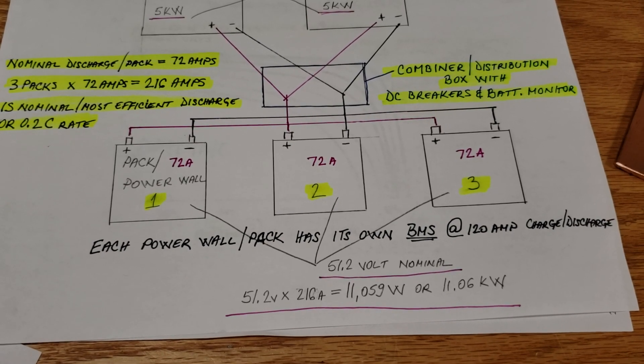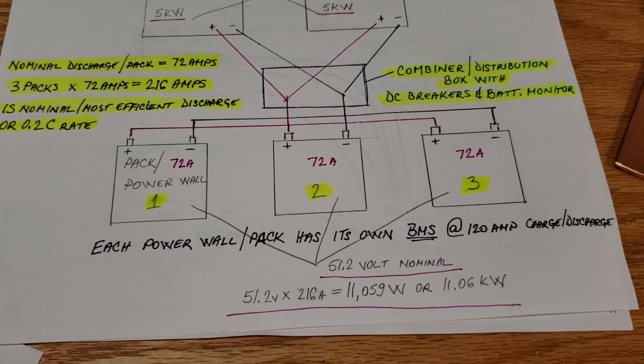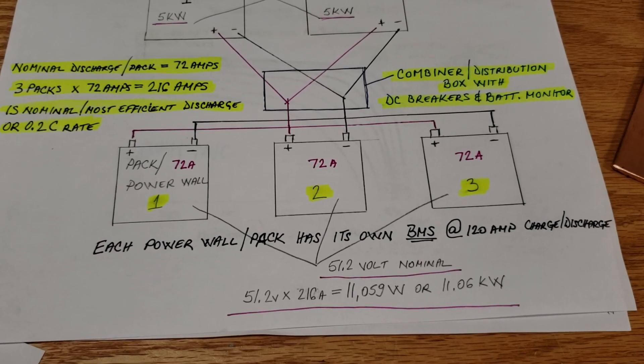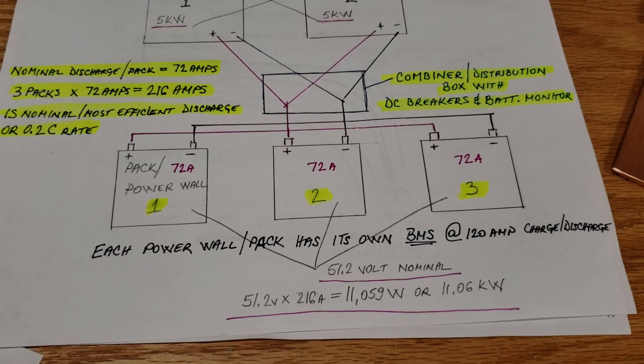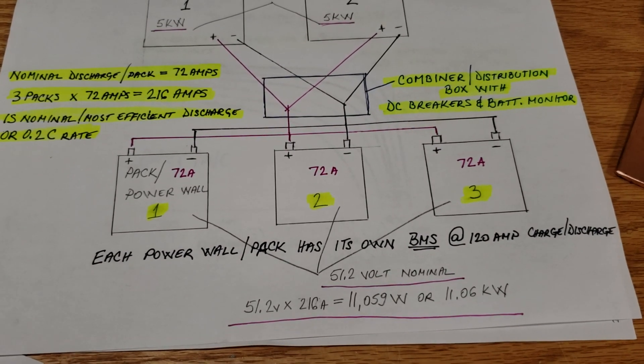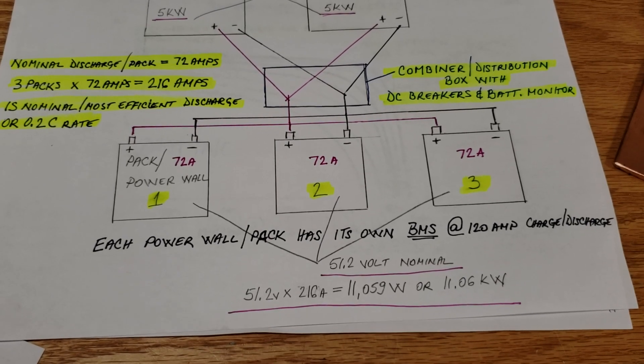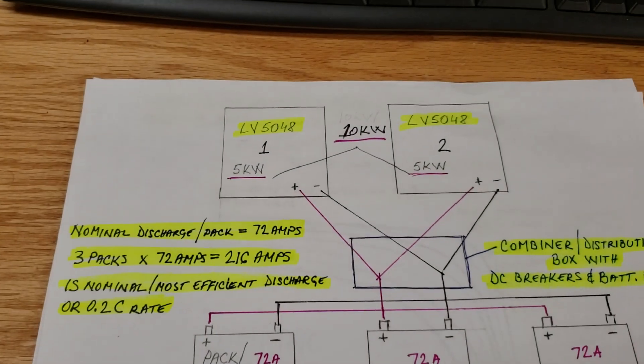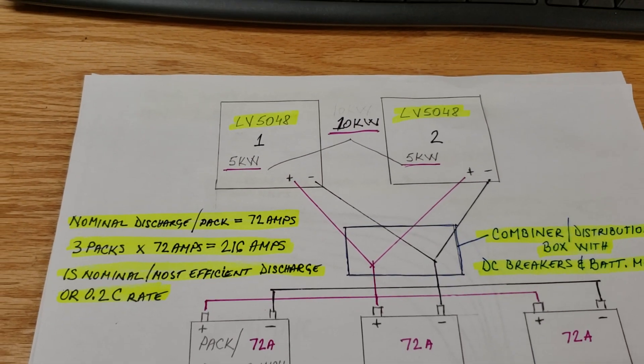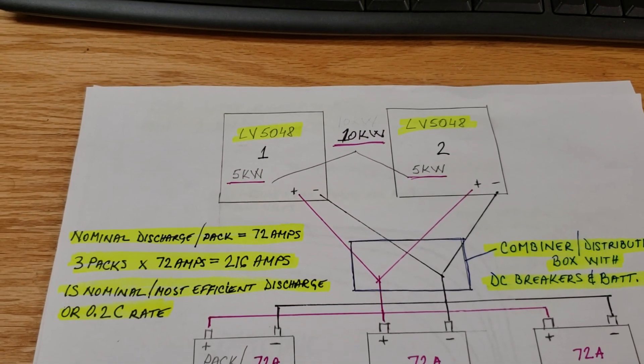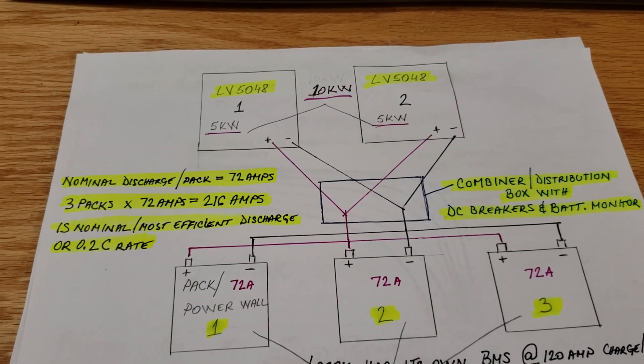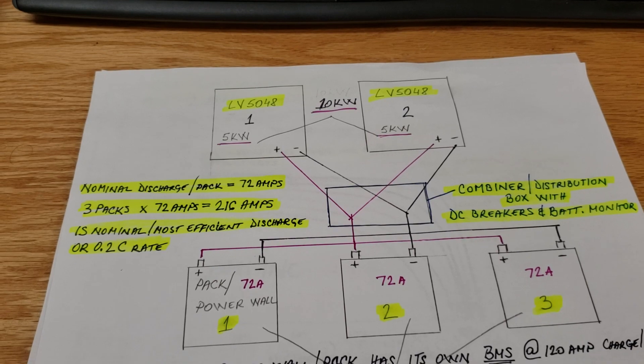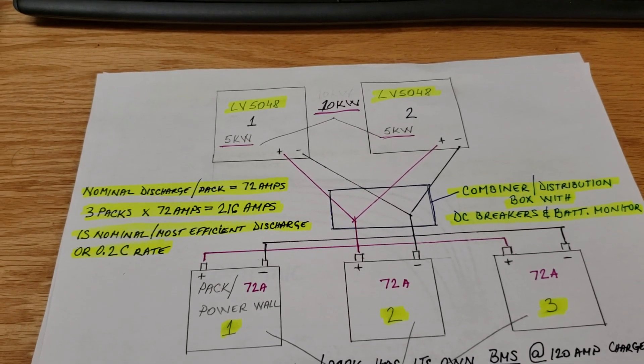I think this will work very well for me and my system. This will provide longevity, this will provide minimum heating up during the charging and discharging cycle of the batteries. I will probably never use it at 216 amps at the same time because 11.06 kilowatts is a whole lot more than 10 kilowatts. Yes, there is some exchange rate between the efficiency and the batteries. This is about the max that I can use, and that max of two LV5048s, I'm still at 0.2C rate discharge for my battery system or power wall system.